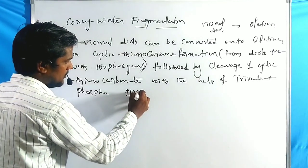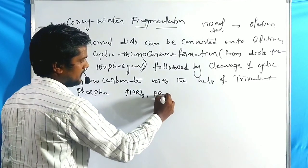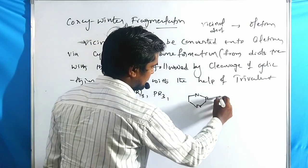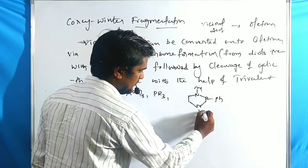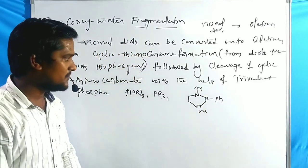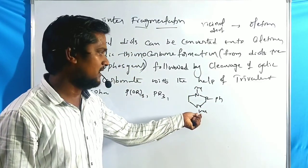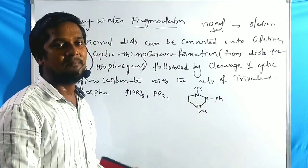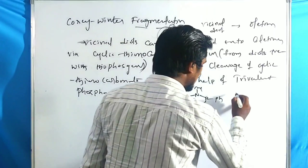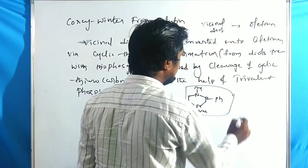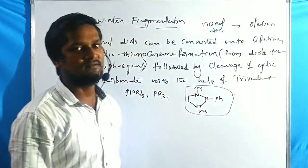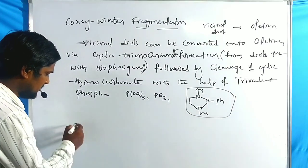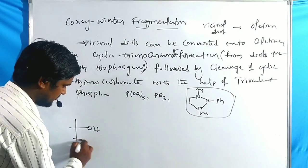The cleavage is done with the help of trivalent phosphorus (PR3), such as P(OR)3 or PR3. One particularly used reagent is 1,3-dimethyl-2-phenyl-1,2,3-diazaphospholidine, which is the best trivalent reagent to convert vicinal diols to olefins.